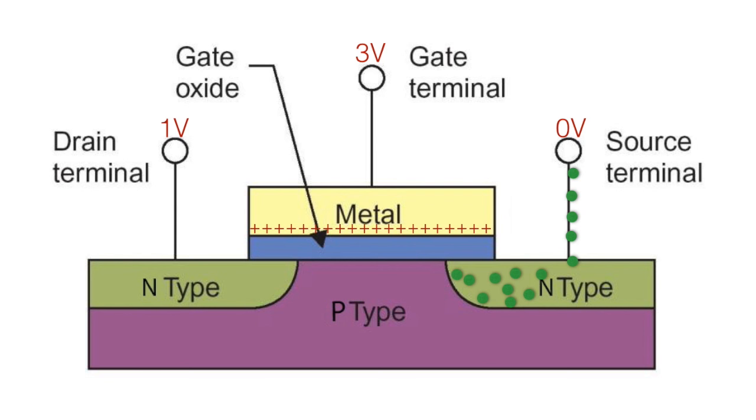Now the transistor behaves as a switch turned on. When this voltage on the gate terminal is removed, the charge movement stops and hence turning the switch off.